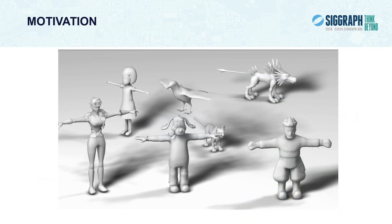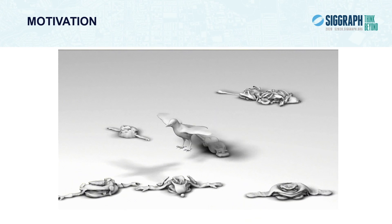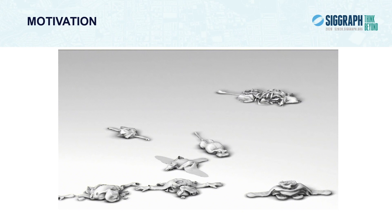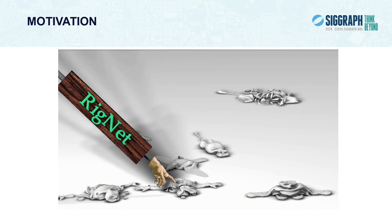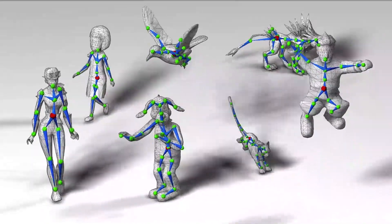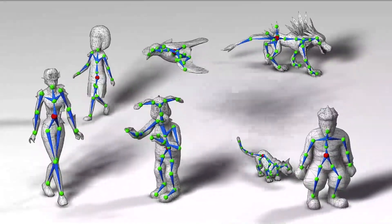Character rigs have been the workhorse for articulated figure animation for over three decades. Without rigs, it's difficult for animators to animate their character models. The motivation of RigNet is to automate the rigging process. As a result, animators can now drive the skeletons to animate models.